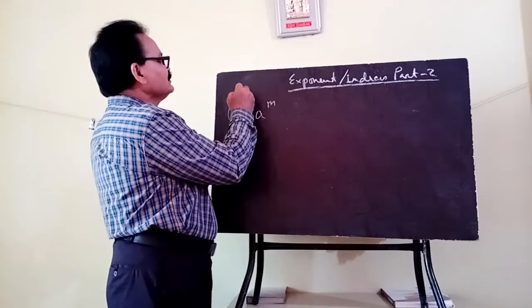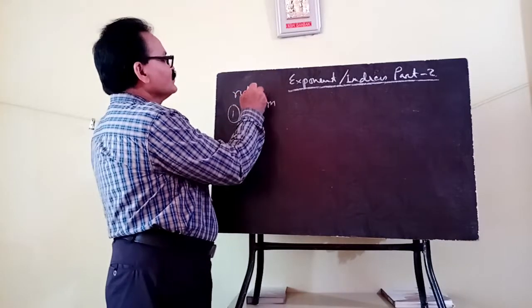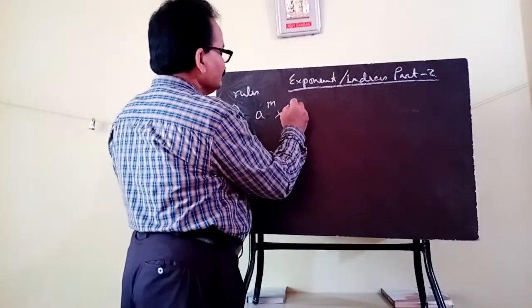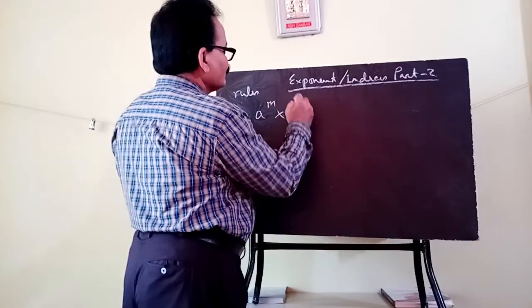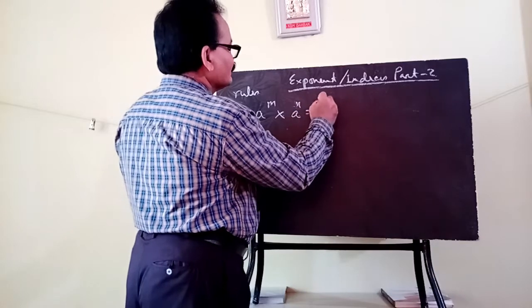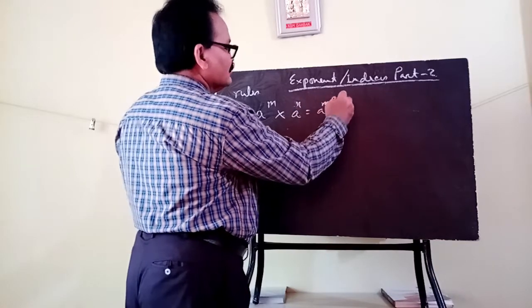Since we had already discussed various laws of exponents — that is the product law, quotient law, power law, etc. The first rule: a to the power m, into a to the power n, equals a to the power m plus n.